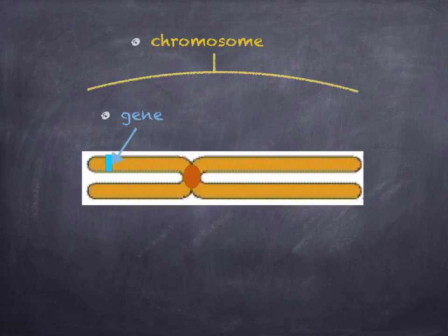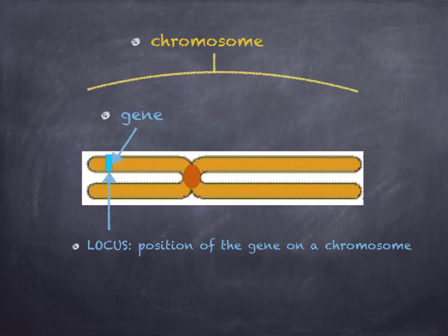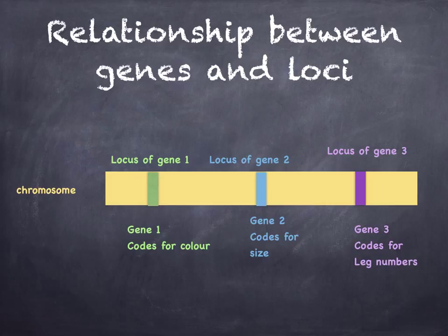For example, you have a gene that codes for the brown pigments in the iris of the eye. The locus is the position of the gene on the chromosome, and genes have got specific loci. Each gene occupies a particular locus on a chromosome. For example, these three genes have different loci on the chromosome: gene 1 encodes for color, whilst gene 2 and 3 encode for size and leg numbers.